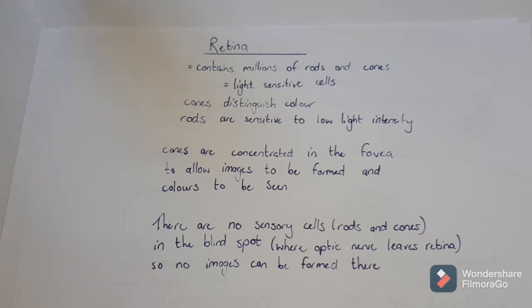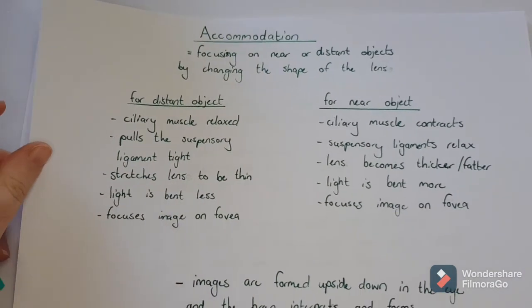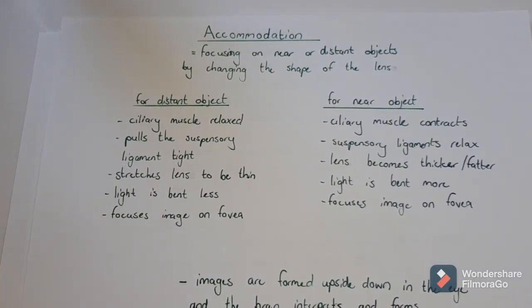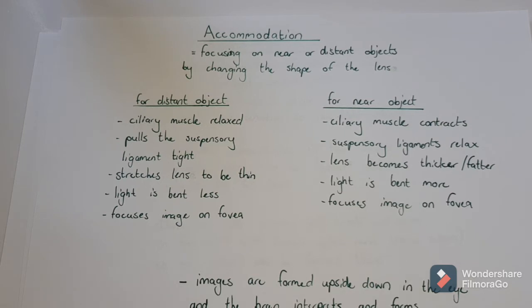The process of how an image actually forms is called accommodation. Accommodation is focusing on either near or distant objects. Depending on whether an object is near or distant, the eye needs to change the shape of the lens in order to refract the light correctly. The lens needs to either bend the light a lot or a little depending on whether an object is near or far.